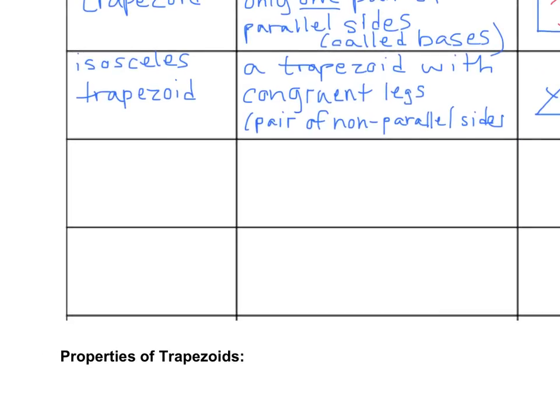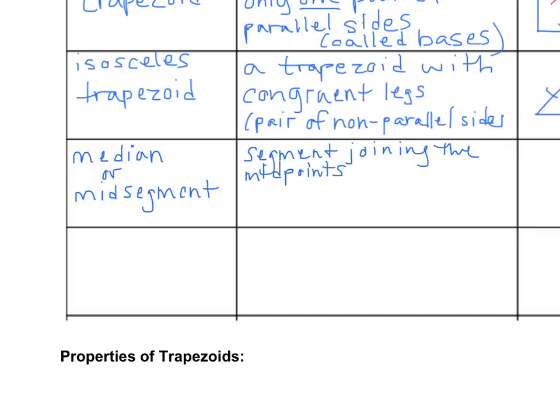Next vocab word that we're going to be dealing with in this trapezoid section is called a median. It has another name too. It's also called a mid-segment. So hopefully the definition is going to make sense as it is a segment, just like in a triangle mid-segment, that joins the mid-points of the legs of a trapezoid.